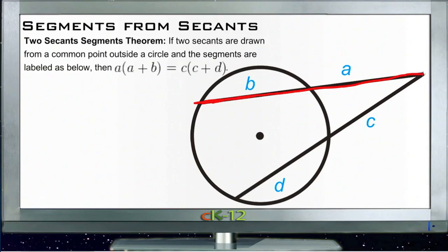And if we have two secant lines, and they meet at a vertex outside of the circle, there's a specific relationship between the segments of those lines where they lie within the circle, like segments B and D here, and where they lie outside of the circle, like segments A and C right here.